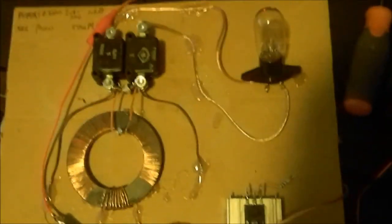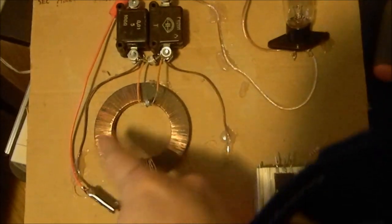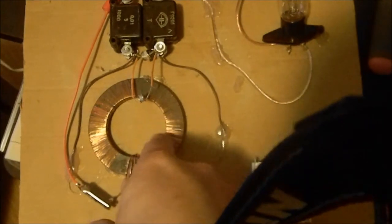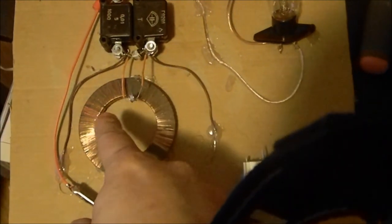Alright, so there's the schematic. Here is everything put together: light bulb caps, secondary. These are two windings that are put in series.